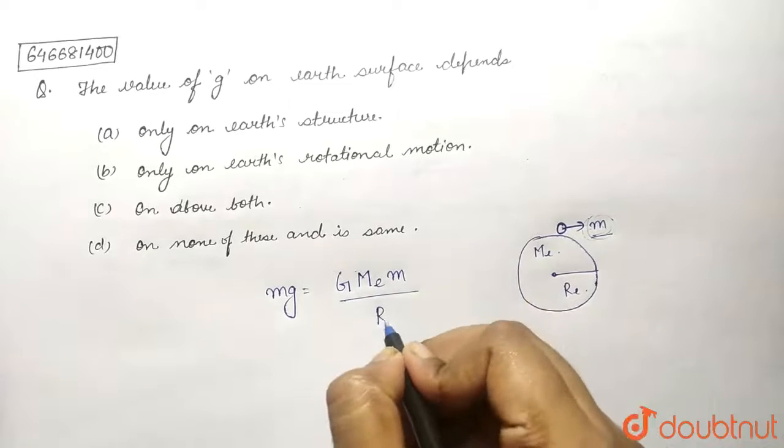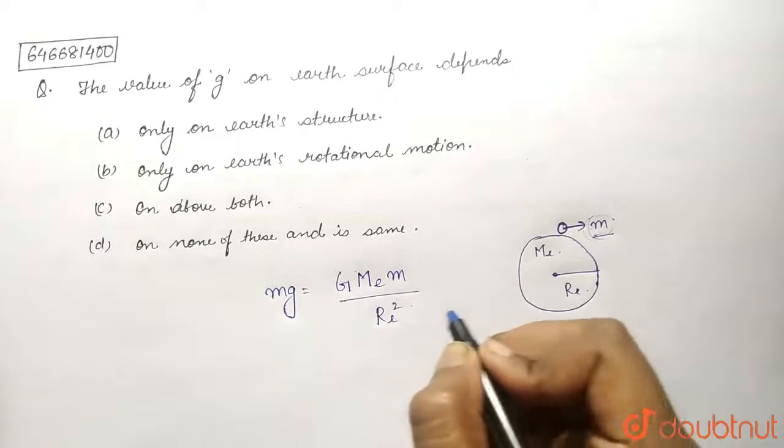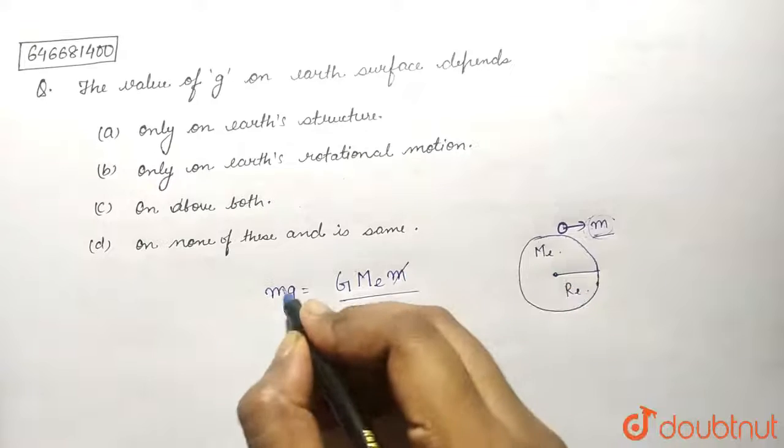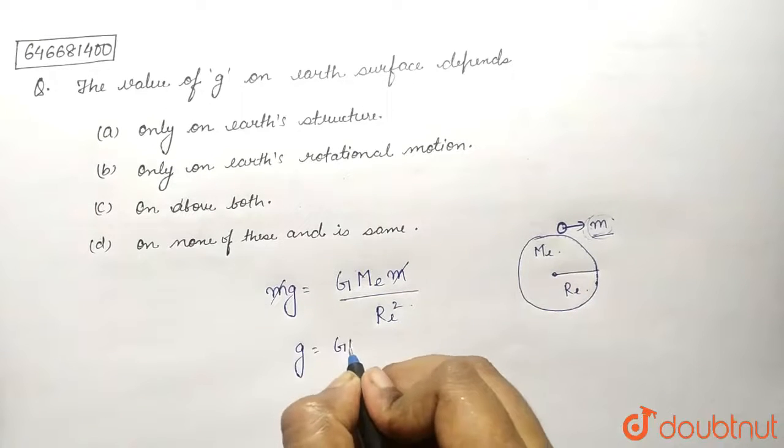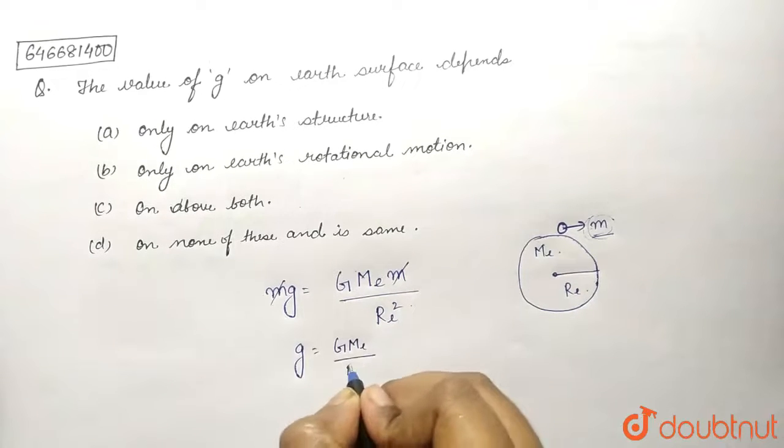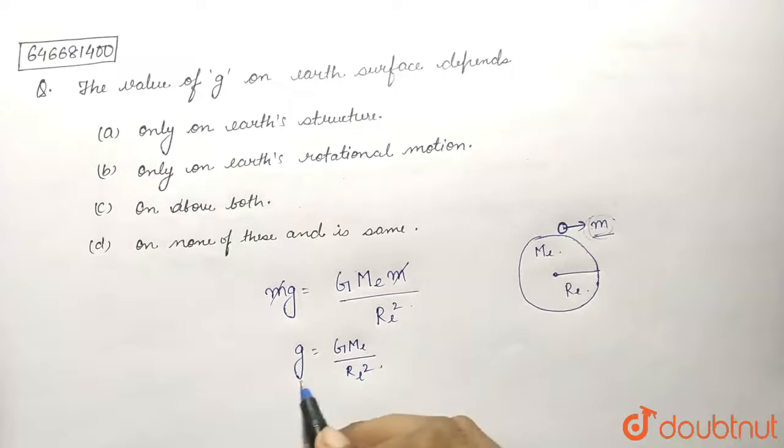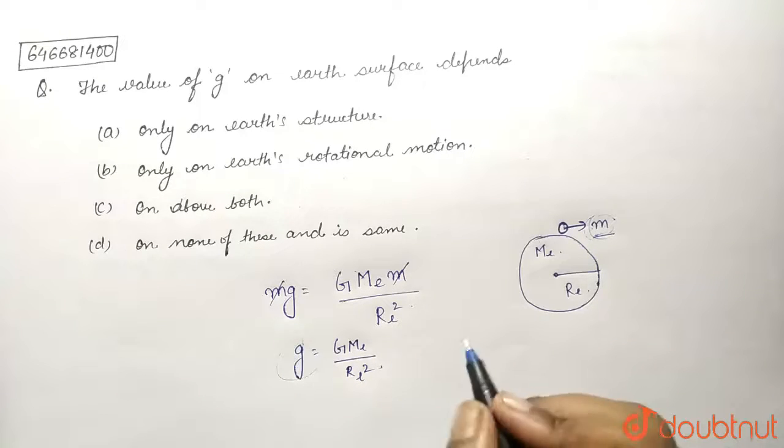So here we will get g equals G M_e upon r_e squared. Here again you can see that gravitational acceleration due to gravity (small g) is inversely proportional to the radius of Earth. That means it is depending on Earth's structure.